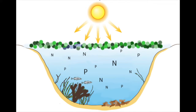When the algae becomes too thick, the sun's rays can no longer reach the plants below the surface and they die, resulting in the removal of oxygen from the water. Eventually, due to lack of oxygen, the organisms in the water also begin to die.